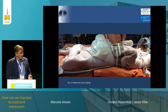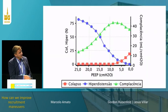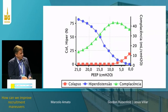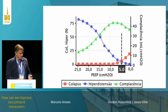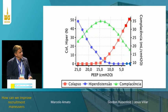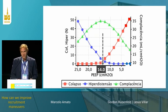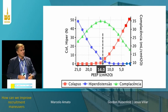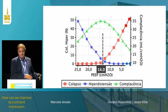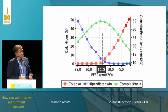Another example: if I put some weight on top of the chest, the curves before the weight showed the animal would be fine with a PIP of five. After the weight, there is a complete shift of all the curves, and now the animal needs 14 of PIP. This is a model of obesity, and obese patients behave exactly this way.